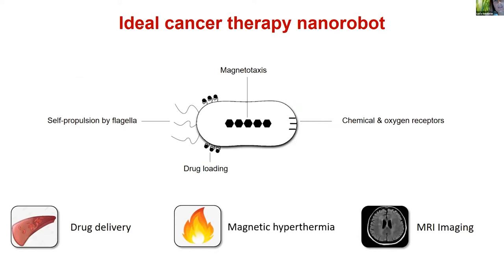In our group we think that magnetotactic bacteria are ideal candidates for cancer therapy nanorobots: they have flagella so they can swim inside the body toward the tumor; they have chemical and oxygen receptors so they swim toward hypoxic regions of the tumor; they have the magnetic chain so we can guide them using magnetic fields; and they can be functionalized with anti-cancer drugs for targeted delivery. Three main biomedical applications have been proposed: drug delivery, magnetic hyperthermia, and MRI imaging. Our group mainly works with magnetic hyperthermia.